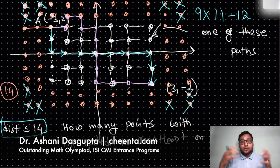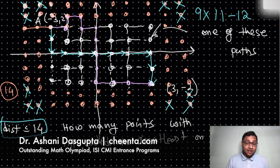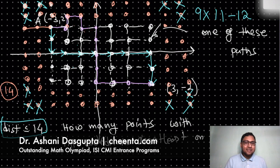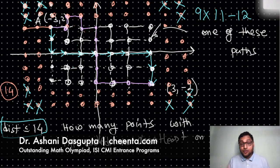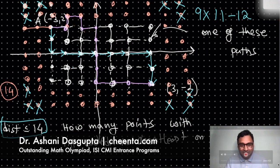Tell me in the comments why you cannot reach those crossed-out points and compute the final answer yourself. Keep on doing great mathematics. Check the link in the description for other IOQM problems and more exciting problems — I'll see you in the next one.